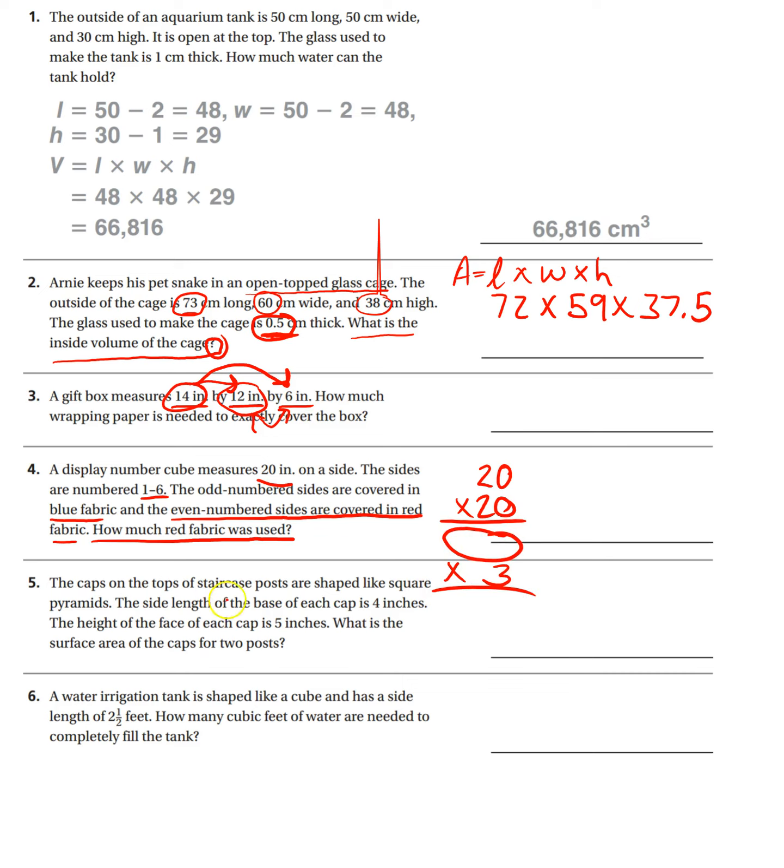Okay, number 5. The caps on the tops of staircase posts are shaped like square pyramids. So I know it's going to have a square base and then triangles coming off of each side. The side length of the base of each cap is 4 inches. So it sounds like this line is 4. The height of the face of each cap is 5 inches. So it sounds like that's 5.